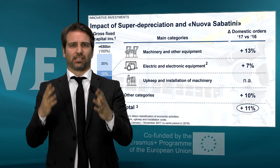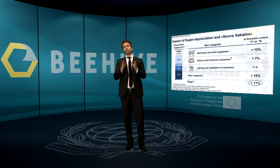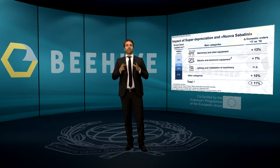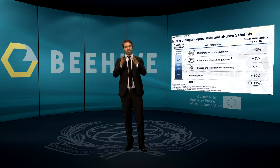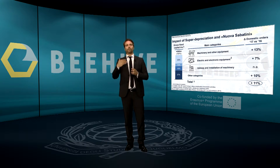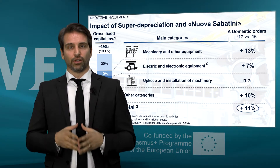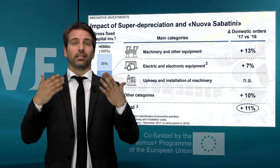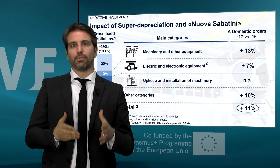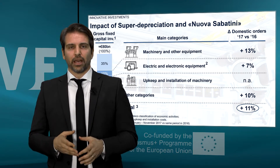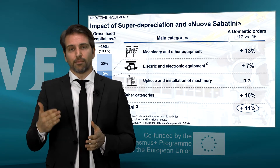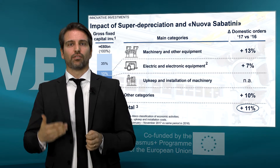In 2018, the government confirmed all those measures, in some cases with little variations, and introduced new measures in order to achieve the 2020 targets, particularly on investments in human capital. For example, a 40% tax credit on the labor costs of personnel involved in training related to Industry 4.0 topics, or the allocation of 95 million euros in order to increase the number of students in technical high institutes from the current 9,000 to 20,000, and finally through strengthening the collaboration between schools and enterprises, and the number of PhDs concerning Industry 4.0 research arguments.